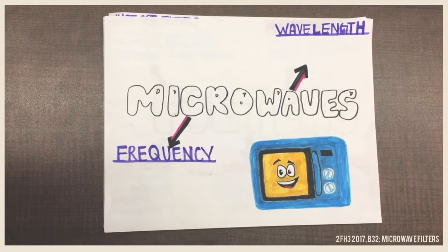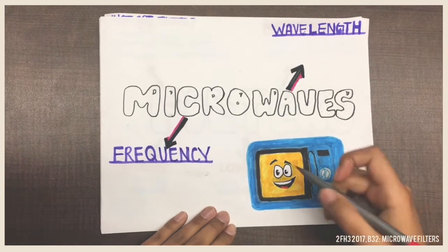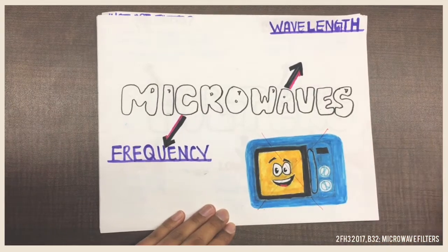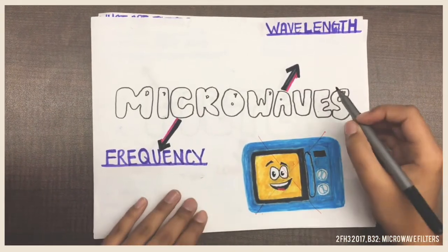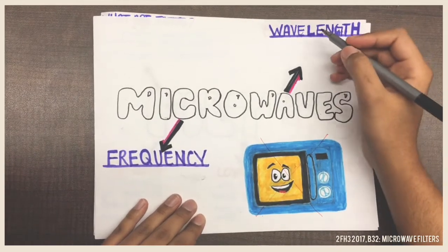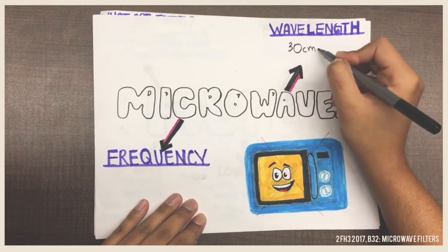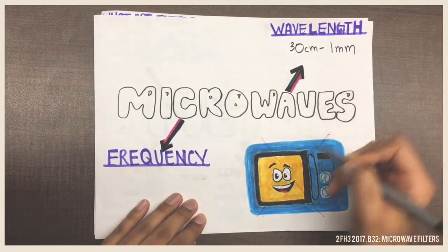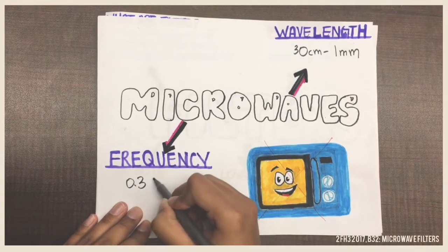Microwaves! We are not talking about the type of microwave that you use to heat up your food — well, actually, those microwaves do use microwaves, hence the name. Microwaves are electromagnetic waves that have a wavelength from 30 centimeters to 1 millimeter. Their frequencies range from 0.3 gigahertz to 300 gigahertz.